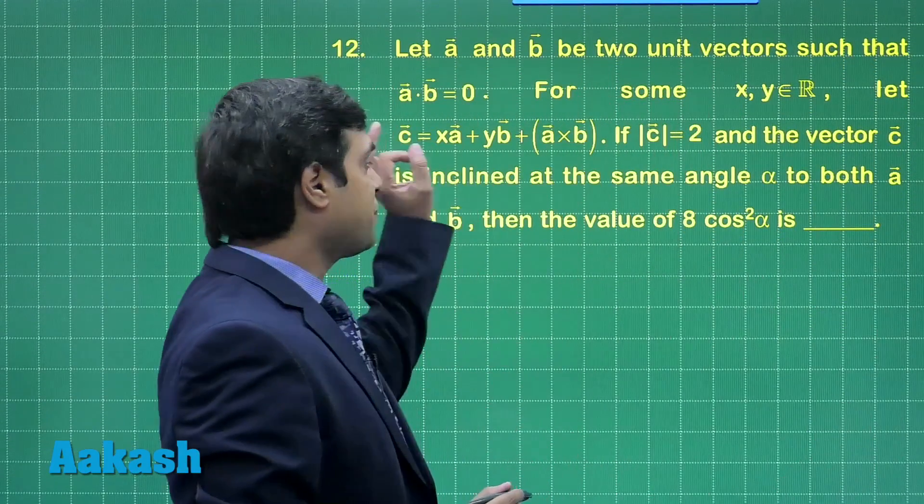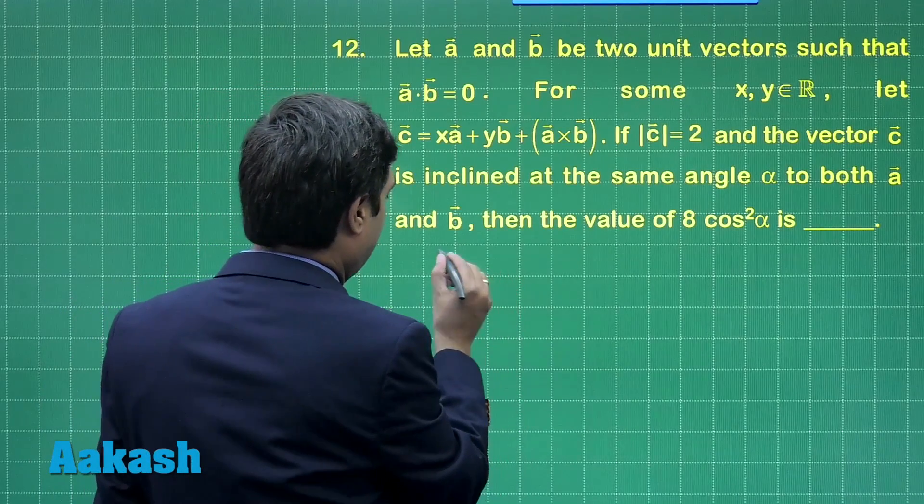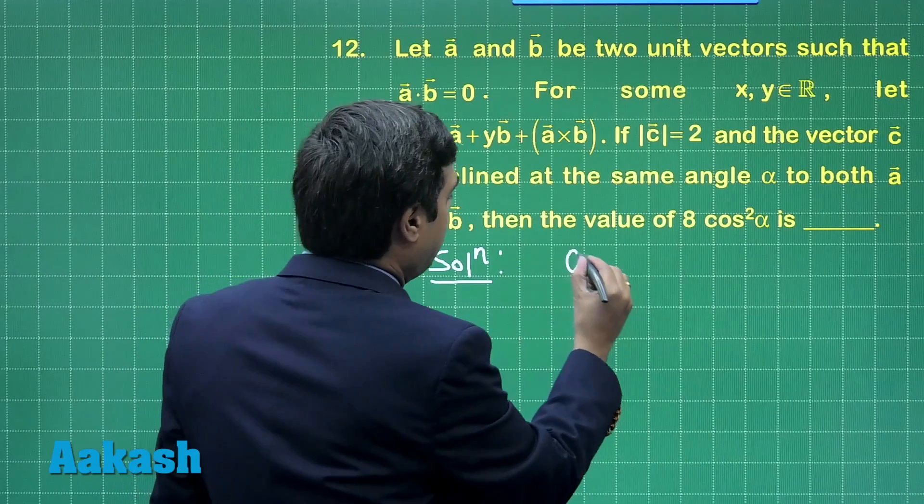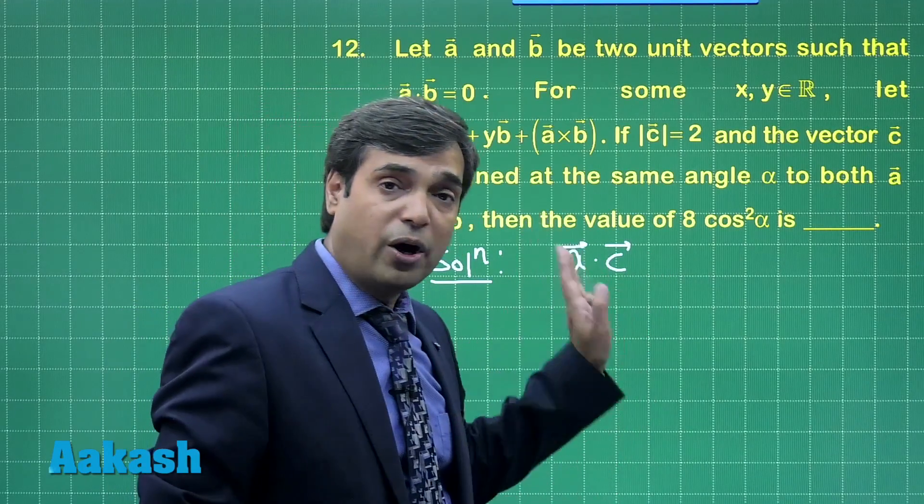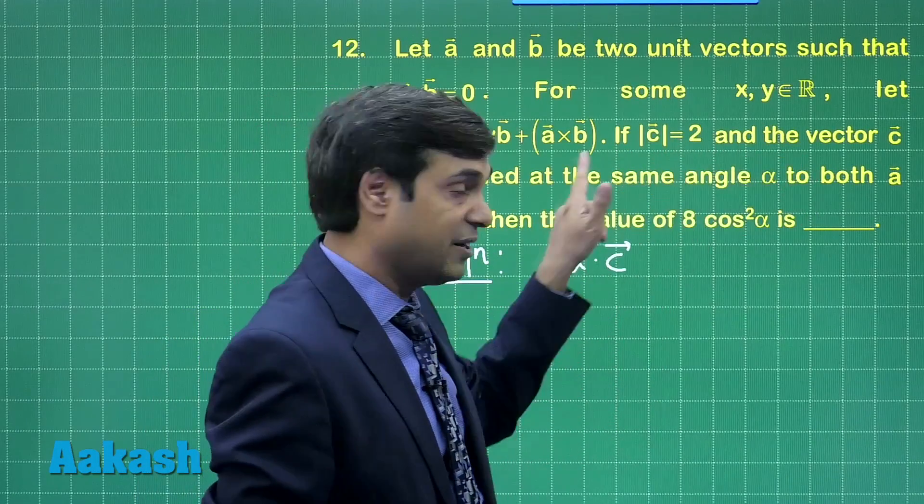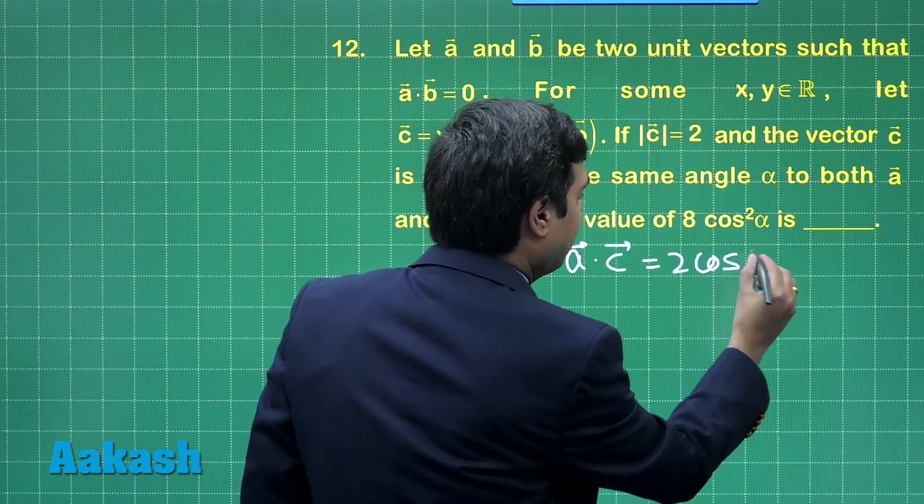Taking dot product of c with a and b respectively, we obtain a dot c. This will be mod a, mod c, cos alpha, because it is given it is inclined at an angle alpha, meaning this will be equal to 2 cos alpha.